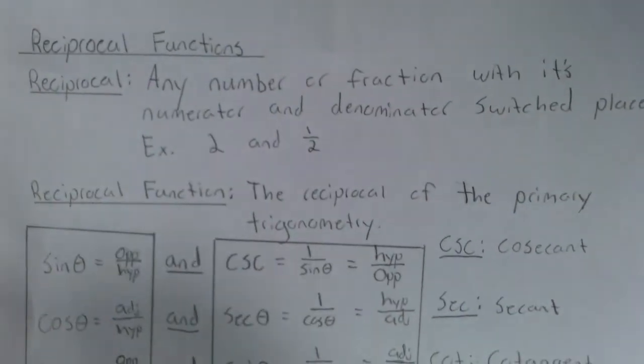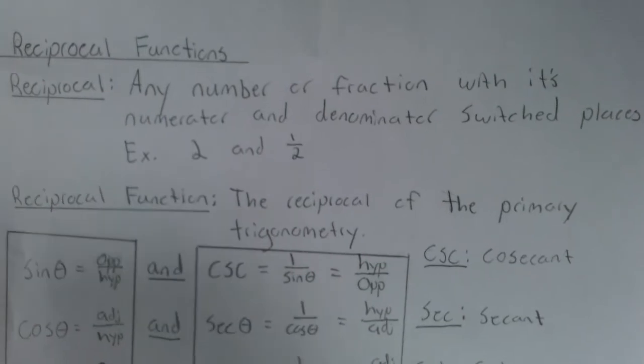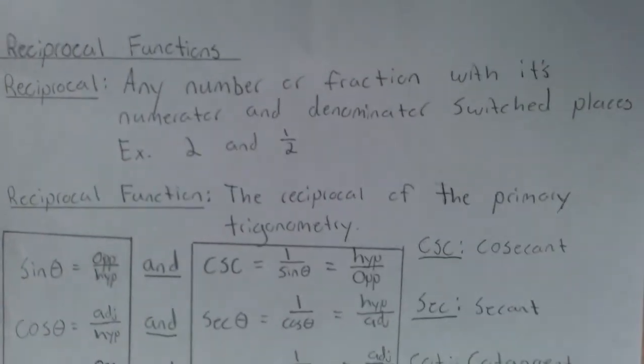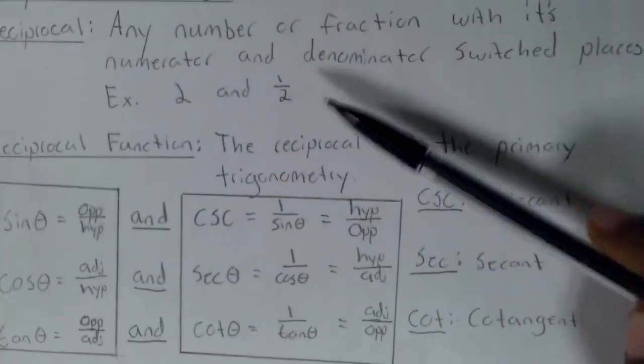Before we start the actual lesson, we should recall what a reciprocal is. A reciprocal is any number or fraction with its numerator and denominator switched places. So an example would be 2 and 1 over 2.